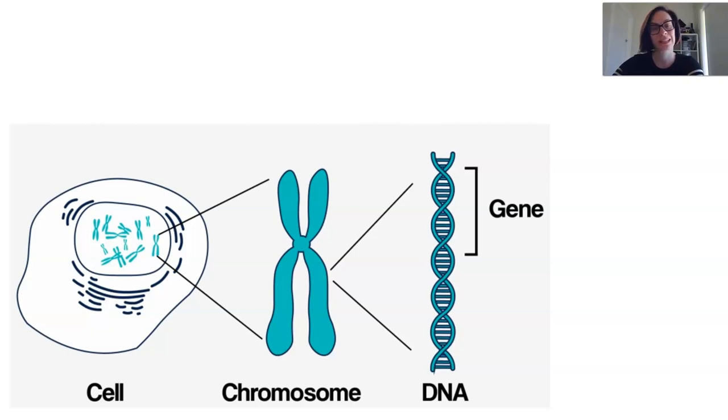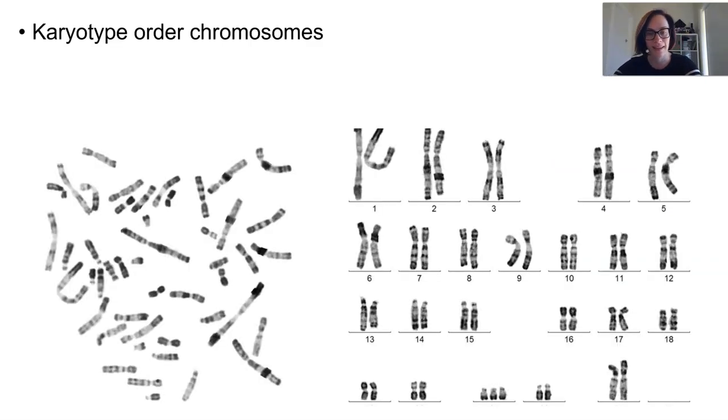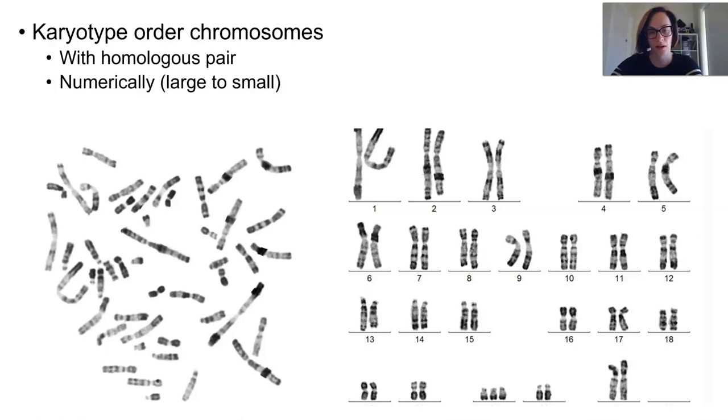Essentially we're zooming out to look at a large number of genes at once being affected. Chromosome abnormalities can be viewed in many ways, one of which is by viewing a karyotype. A karyotype is a way of displaying chromosomes which orders them with their homologous pair numerically.